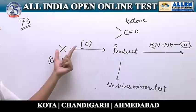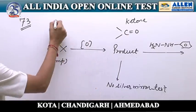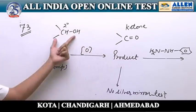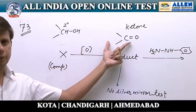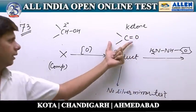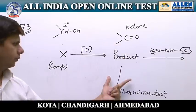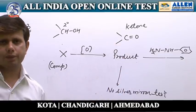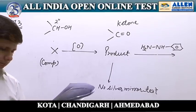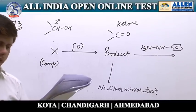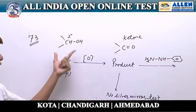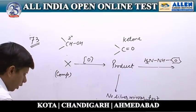Since oxidation of X gives a ketone, compound X should be a secondary alcohol, because a secondary alcohol on oxidation gives a ketone. If the compound is a ketone, it can react with phenyl hydrazine — a characteristic property of a carbonyl compound — and since it is a ketone, it does not react with Tollens' reagent to give a silver mirror test. So compound X should be a secondary alcohol. In the given options, the first is an aldehyde, the second is a primary alcohol, the third option is a secondary alcohol, and the fourth is again a primary alcohol. Therefore, the correct answer is the third option.